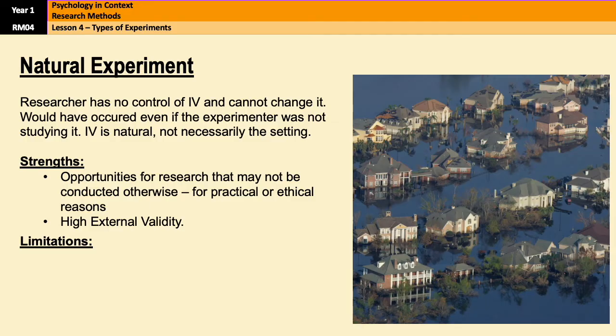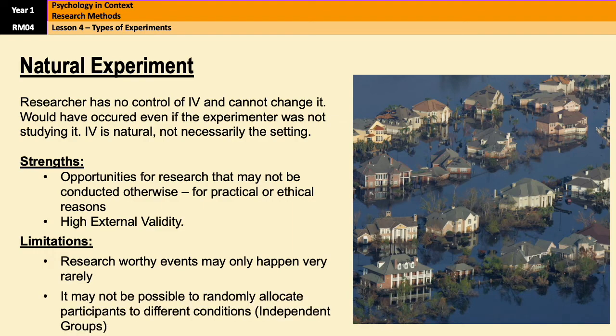However, limitations are things like things that are worth researching only happen very rarely. So it might take a while for something to come along that you actually want to study like natural disasters. They don't just happen every day. So it can take a little bit of time for something to come about. Also, it may not be possible to randomly allocate participants to different conditions, particularly if you are using an independent groups design. Again, because the IV is naturally occurring, the event or whatever it is that you're studying will determine what the IV is.